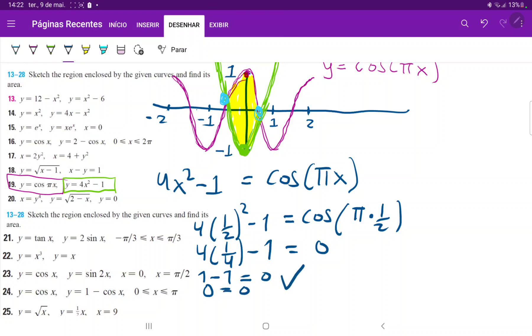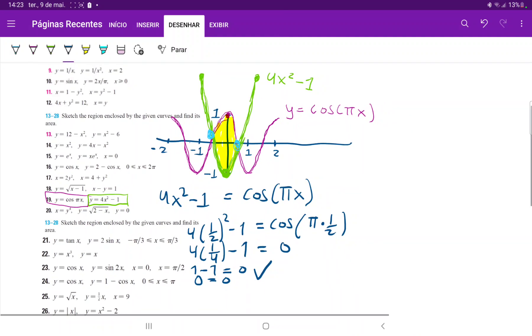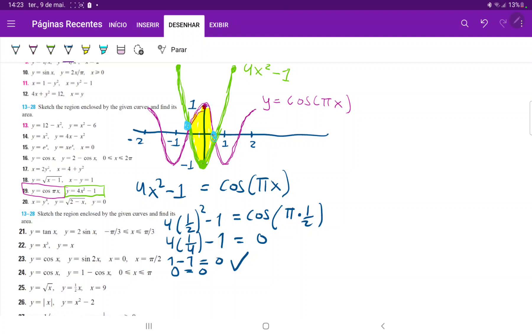We see that one of the points is one half. Because both the cosine and this other function are even functions, it will give you the same thing if you plug in negative one half. The bounds are from negative one half to positive one half.